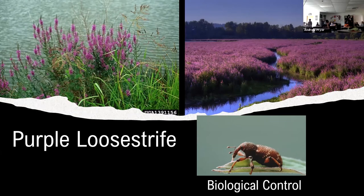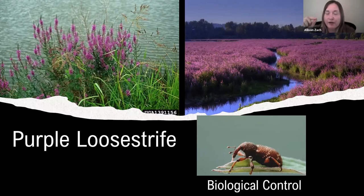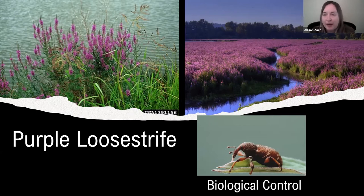We looked over in Asia to find out what controls purple loosestrife there, and we found a little weevil — a tiny bug. We grow this insect, release it in wetlands, and it kills all the purple loosestrife plants but doesn't eat anything else, so all those weevils will die. That's how we use a biological control to control an invasive plant — using one living organism to control another, such as a disease or an insect.